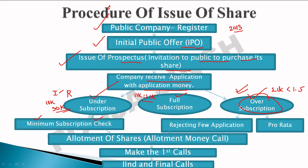In the case of over-subscription, the company has two options. First, it can reject some applications — for example, if 1 lakh shares were floated and 1.5 lakh applications received, the company can reject 50,000 applications. The second option is pro-rata allotment, which is very important and has a separate video. In pro-rata, shares are allotted in proportion — for example, in a 5:1 ratio, whoever applied for 5 shares gets 1 share, whoever applied for 10 gets 2, and so on. Every applicant gets fewer shares but in a fair proportion.